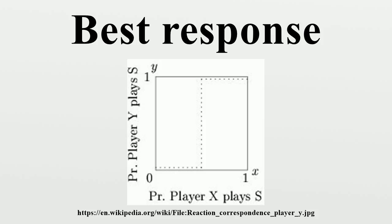One well-known game with payoff asymmetries is the matching pennies game. In this game, one player — the row player, graphed on the y-dimension — wins if the players coordinate, while the other player — the column player, shown on the x-axis — wins if the players discoordinate. Player y's reaction correspondence is that of a coordination game, while that of player x is a discoordination game. The only Nash equilibrium is the combination of mixed strategies where both players independently choose heads and tails with probability 0.5 each.